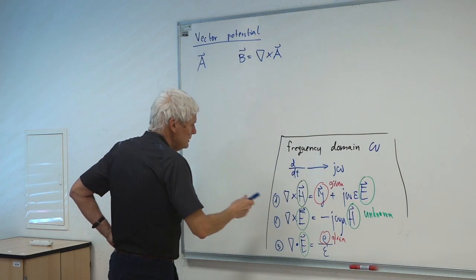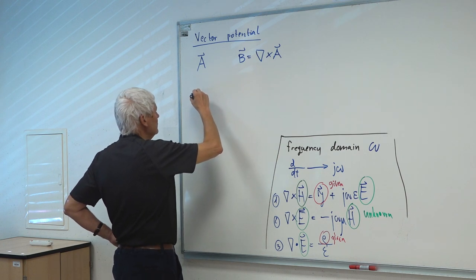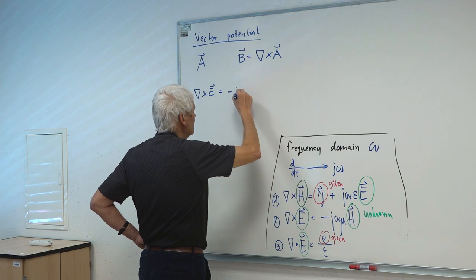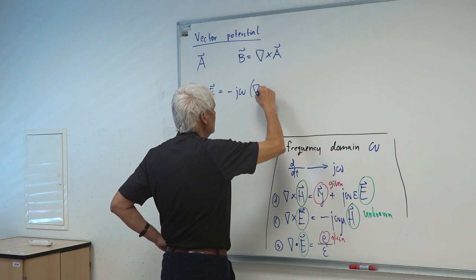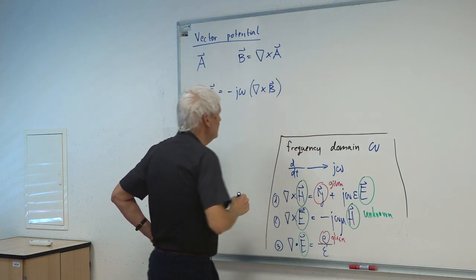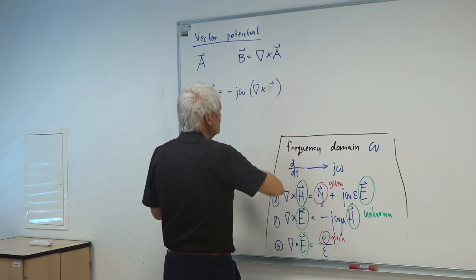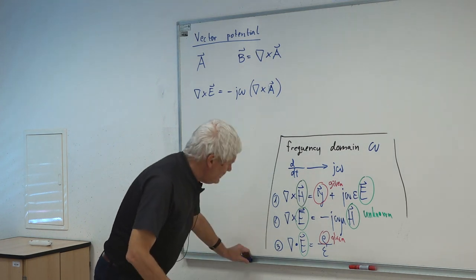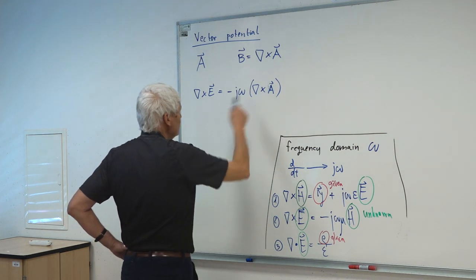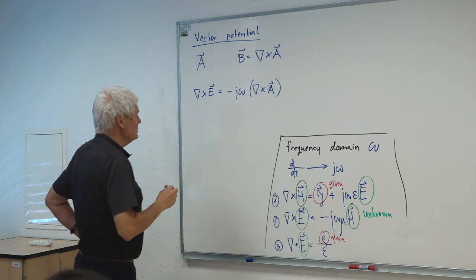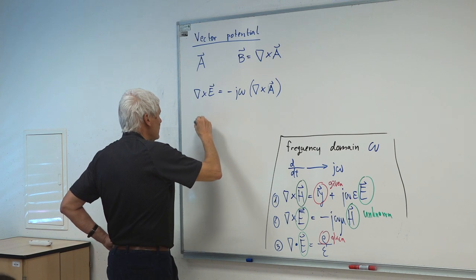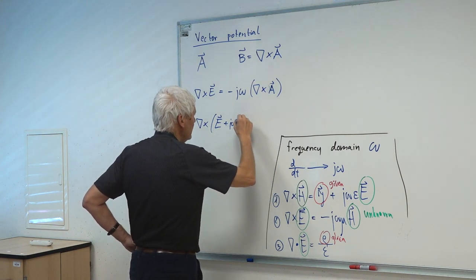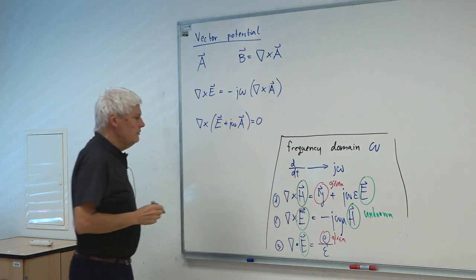If we look at the second Maxwell equation, we see that curl of E is equal to minus jω. Here we have curl of B — curl of A, not B — because this is the magnetic field density B as we have defined it. Since we have a curl operation, a curl of E plus jωA is equal to zero.